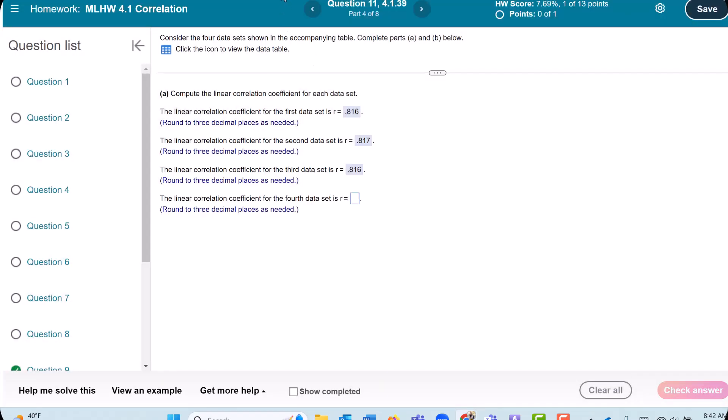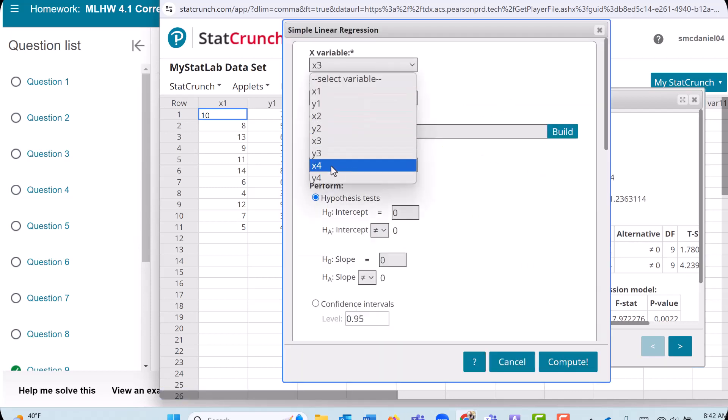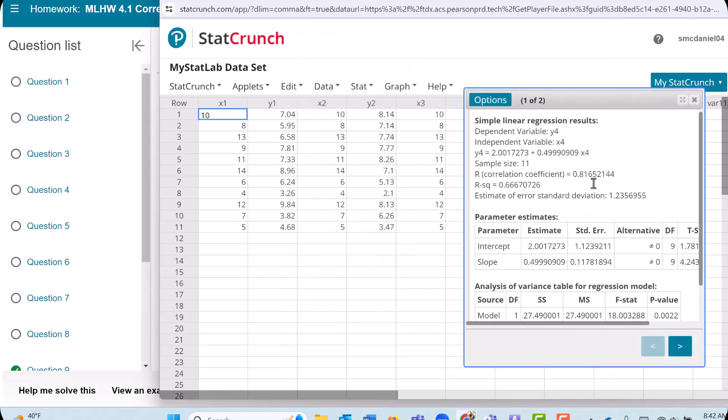And then finally do the fourth data set. Options and Edit, and then go to X4 and Y4. Okay, we get 0.817.